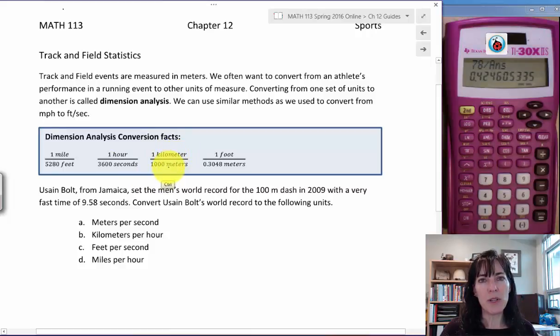Here, you could have 0.3048 meters in the numerator and one foot in the denominator. And it just depends on what you're starting with and what you want to convert to. And I'll show you some examples.